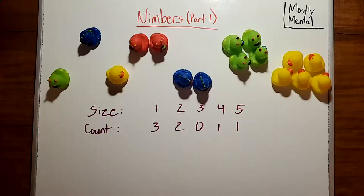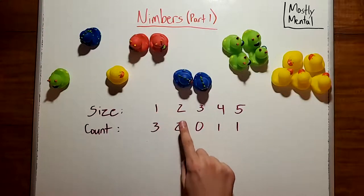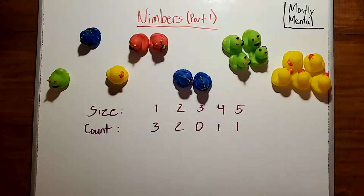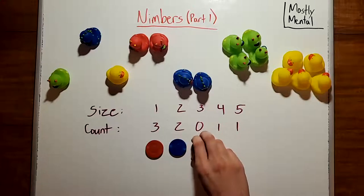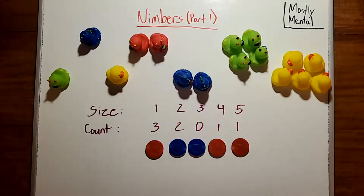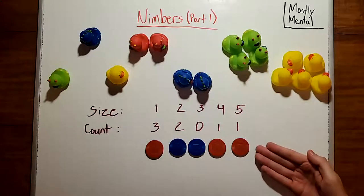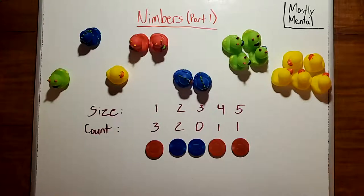To do that, consider a position of Nim like this one. We'll count the number of piles of each size. In this case, we have three piles of size one, two piles of size two, and so on. And we'll lay out a line of coins, one for each size, with the red side up if the count is odd and blue if the count is even. And every time we make a move in Nim, we'll flip over the coins accordingly.